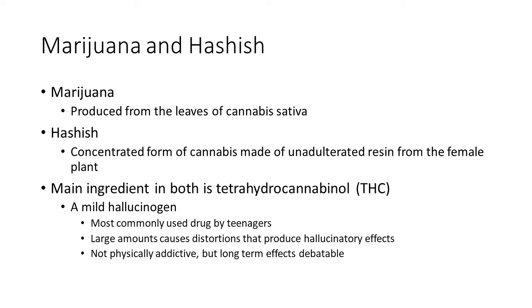We're going to start with marijuana. Marijuana is the drug most commonly used by teens. It is produced from the leaves of cannabis sativa, and hashish is the concentrated form of cannabis made of unadulterated resin from the female plant. The main ingredient in both is THC — I'm not going to say the actual scientific name. THC is a mild hallucinogen.